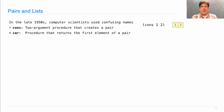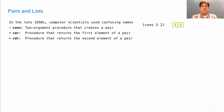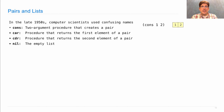'Car' is a procedure that returns the first element of a pair. So if I have the result of consing one and two and I call car on that, I'll get one. 'Cdr' is a procedure that returns the second element of a pair, and it's common to refer to the car and the cdr of a pair. Finally, 'nil' is the empty list.